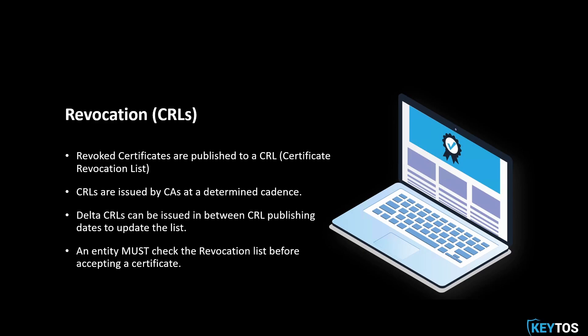When you're validating that certificate, you're supposed to look at that list. One of the common mistakes we see here is organizations publishing CRLs very often. Let's say they want it every day, and then you ask them how often they actually revoke a certificate, and they say maybe every six months. It's not worth publishing every day, because if that CRL is not up or up to date, it will actually cause an outage — the entity checking a certificate will fail to validate it because it couldn't reach the CRL.